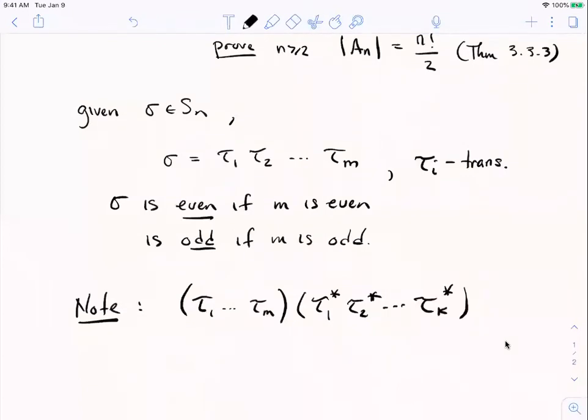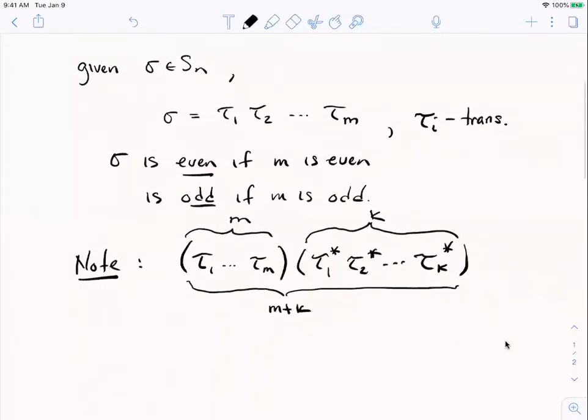Okay. So I have a product of m transpositions, times a product of k transpositions. How many transpositions total? Well, I mean, if there's m of them in the first grouping and k of them in the second grouping, then there's m plus k of them in the total. Yeah.